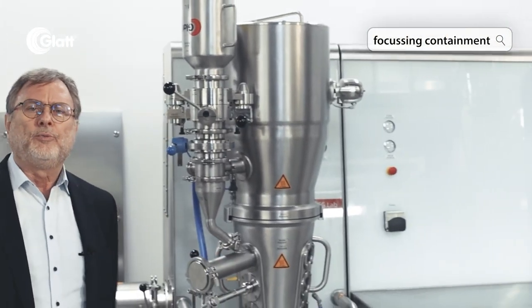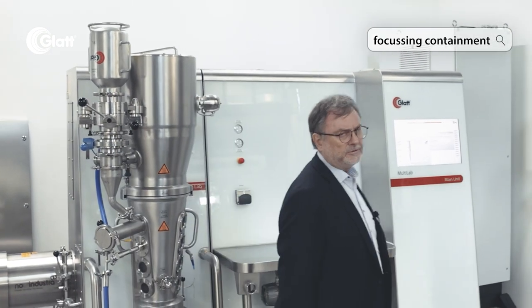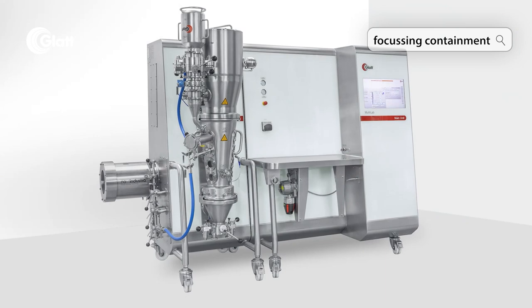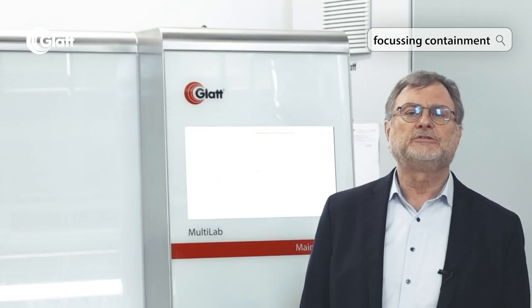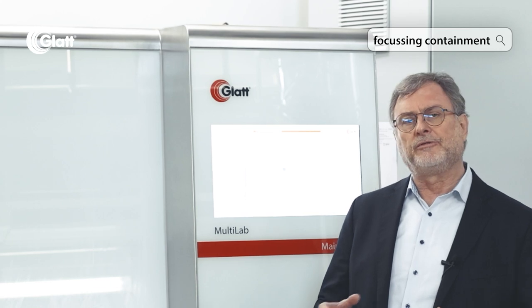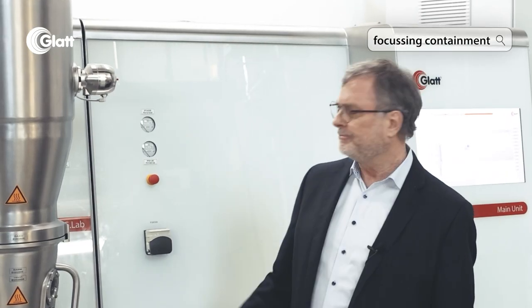The Multilab is a perfect system for that. Here next to me, we see the Multilab in containment execution. As the name says, you can run different processes on the Multilab. It consists of the so-called main module, which contains the control system, the general process technology, and the process modules. Here, the GPCG lab is connected to the main module.